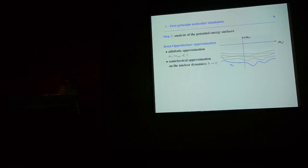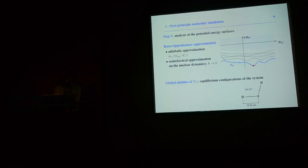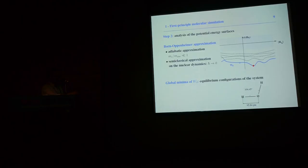The first thing we must do is search for the global minimum of W₀. This global minimum corresponds to the stable configurations of the molecule. For instance, for the water molecule, we know its equilibrium structure, which can also be measured experimentally using NMR measurements.